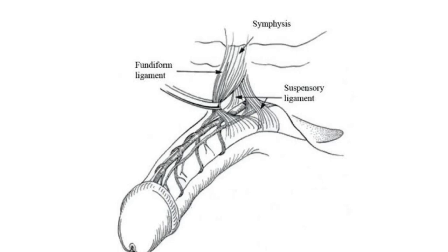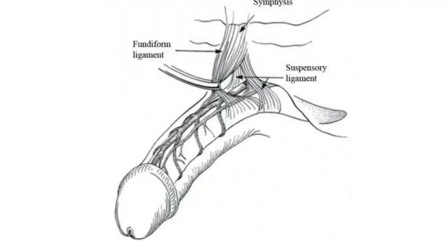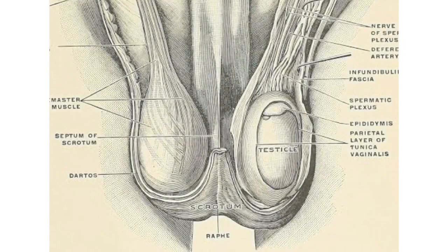The fundiform ligament is an irregular mass or condensation of collagen and elastic fibers of subcutaneous tissue that descends in the midline of the linea alba, superior to the pubic symphysis. The fundiform ligament splits to surround the p structure and then unites and blends inferiorly with the dartos fascia, forming the scrotal septum.